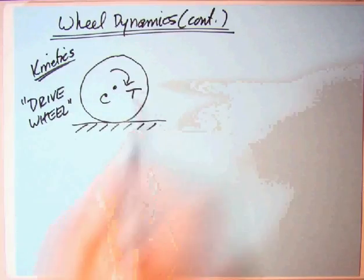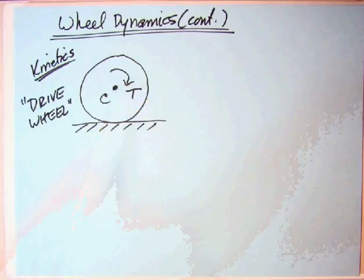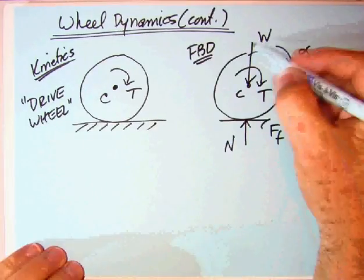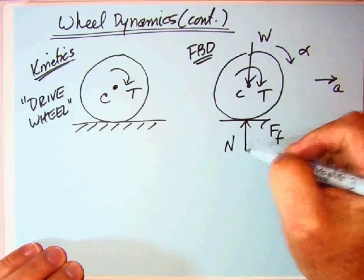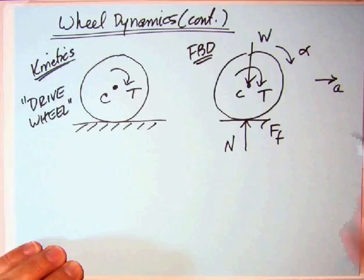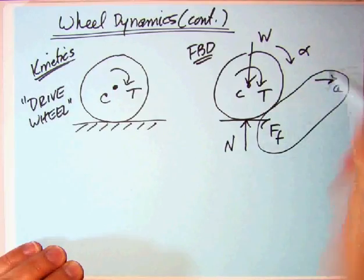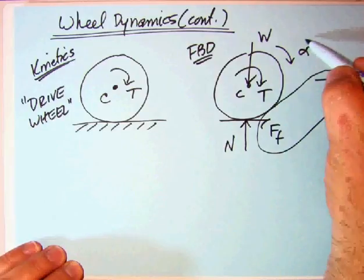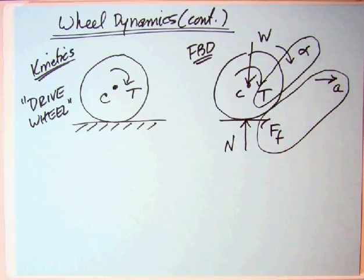You've got the drive wheel in which you've got an applied torque T about the axle. This could be the rear wheel in a rear wheel driven car or front wheel, but it is being driven by a torque. For the free body diagram, we have the weight going down through the center, the normal force pushing up, the torque T applied at the axle C. The friction force is to the right because it is what produces the translational acceleration, whereas the torque produces the angular acceleration.